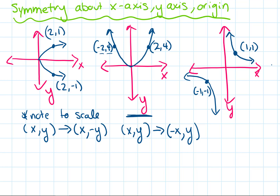When we have symmetry about the origin, that means if we start with some coordinate (x, y), the symmetrical point has the opposite sign for both the x and the y. So let's say our original point is (1, 1). The symmetrical point, if it's symmetrical about the origin, is going to be (negative 1, negative 1).